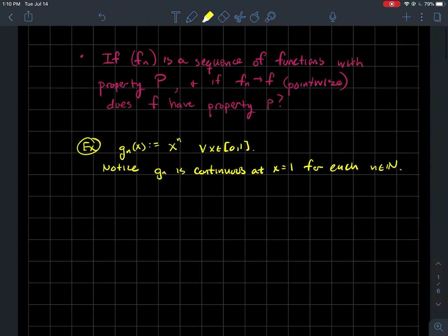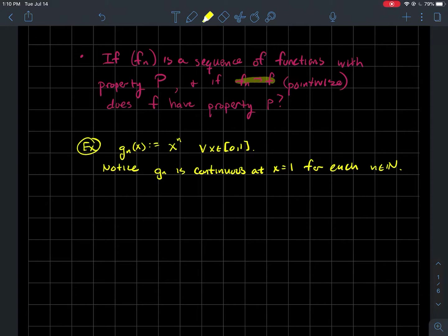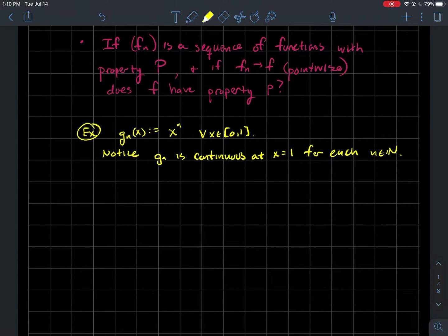Let's look at some examples to explore this. When I write one arrow here, that means f_n converges pointwise to f. If you remember, there are two ideas of convergence: pointwise and uniform. We're going to first explore the idea of what happens if we just have pointwise convergence. Let's look at an example: say I've got a sequence g_n which is just x to the n.